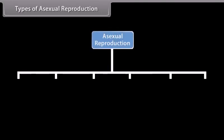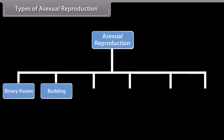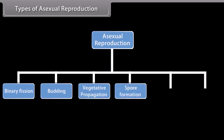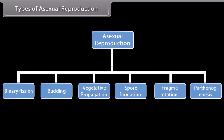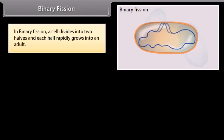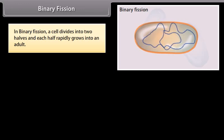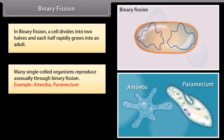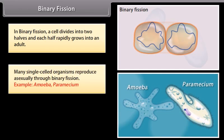Do you know how organisms reproduce asexually? An organism may reproduce asexually by binary fission. In binary fission, a cell divides into two halves, and each half rapidly grows into an adult. Many single-celled organisms reproduce asexually through binary fission.